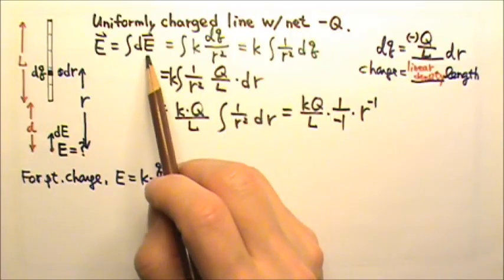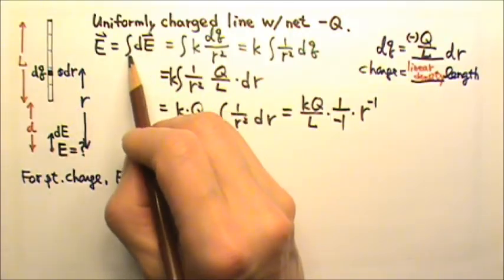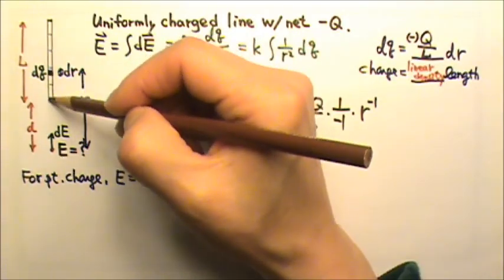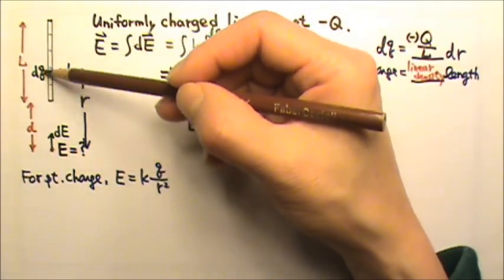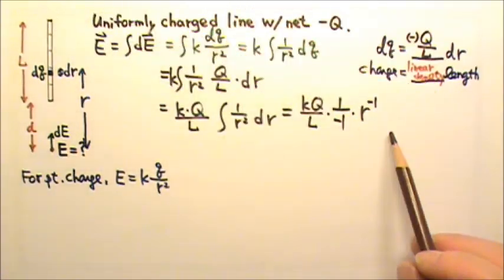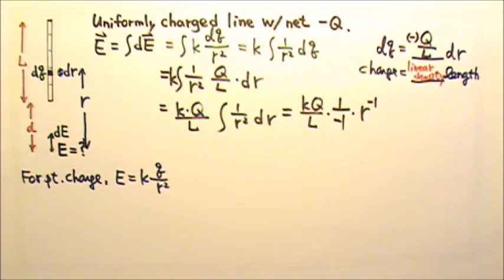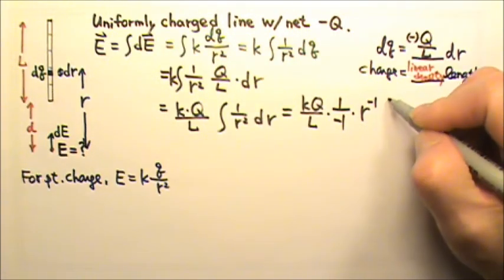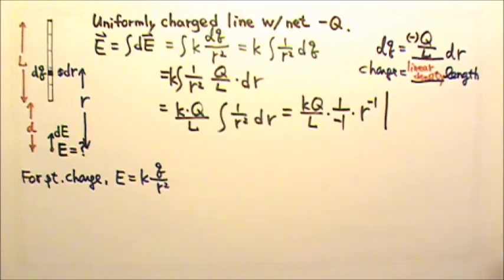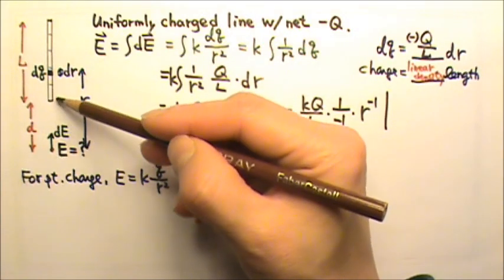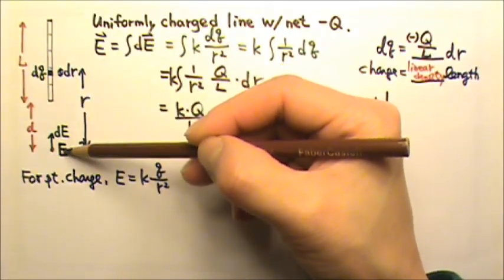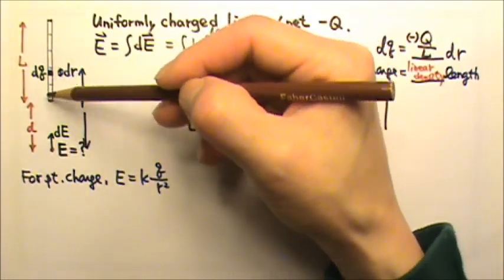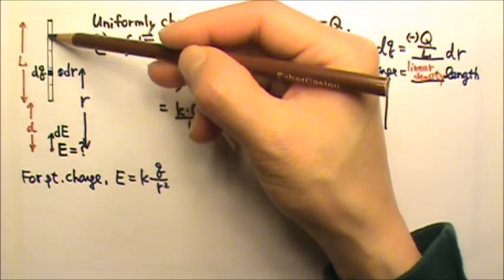When we do the integral, we have to integrate and add the dE produced by every bit of dQ. And we have to go from one end of the rod to the other end. So we don't have to do plus c. We just have to write the bounds. When the dQ is at the lower end of the rod, the r is d. And then we get to the other end.